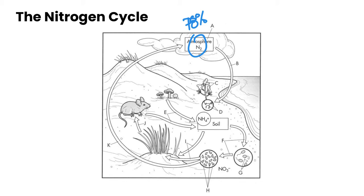So let's go through the nitrogen cycle. Label A is our atmospheric nitrogen in the form of N2. And the first step that needs to happen is a process called nitrogen fixation, shown at label B.